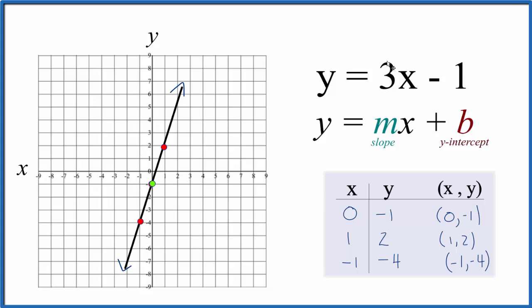Then for the slope, we have a 3 here, but we really need to think about this as a fraction, 3 over 1. Same thing, it's still 3, but as a fraction, we can say rise over run.